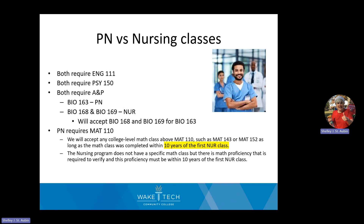The only class that is not the same is the math course. Practical nursing has a math class required, while nursing does not have a math class required, but does have a math proficiency, which we'll talk about again. Both programs have a 10-year window on their math, so you have to have met the math requirement within 10 years of beginning the program. The math course for practical nursing can be any college-level math course, math 110 or higher, completed within 10 years of beginning the nursing program.